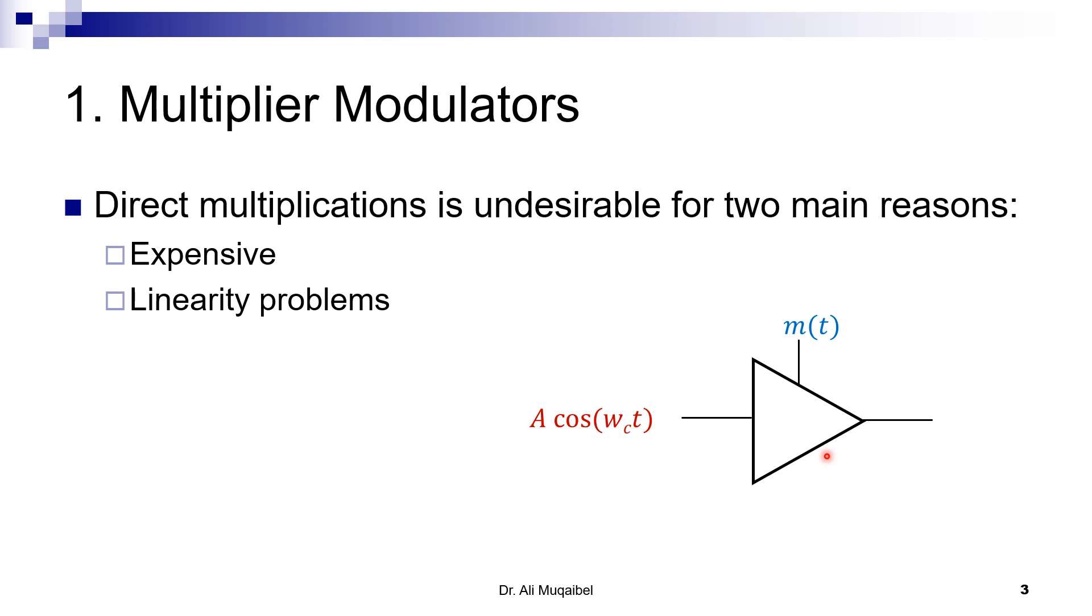However, this is undesirable for two different reasons: to build a direct multiplier is expensive, and it also suffers from linearity problems. So we'll stop it there.